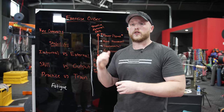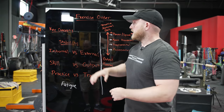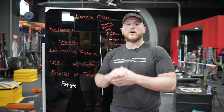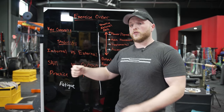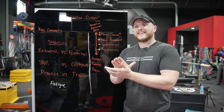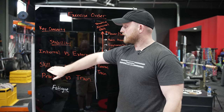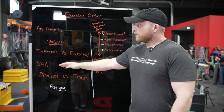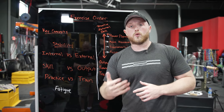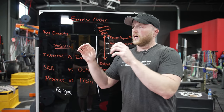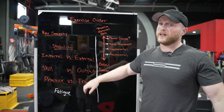On the other side is external stability. Think about a leg press — it's a machine on a track that locks you into position so all you have to worry about is exerting force. Understanding internal versus external stability is a really key factor in understanding why certain exercises go before others in your session.